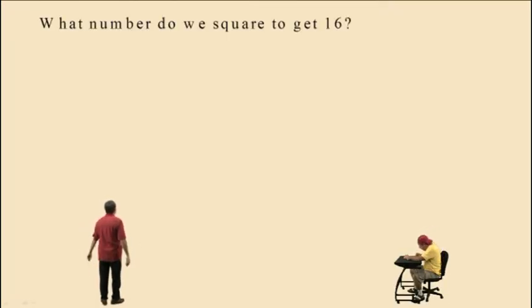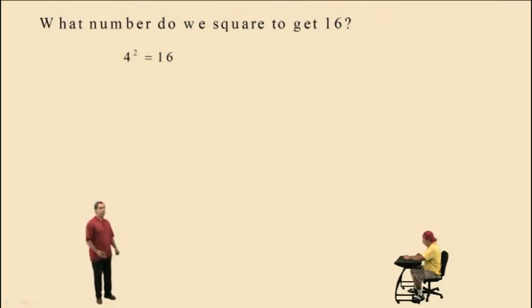Right there. What number do we square to get 16? Well, there's actually two numbers that we square to get 16. Positive 4. 4 squared is 16. But also, negative 4 squared is 16 because negative 4 times negative 4 is a positive 16.